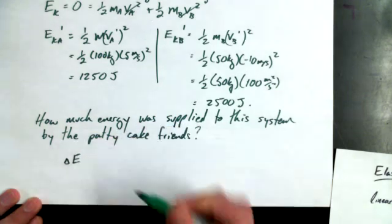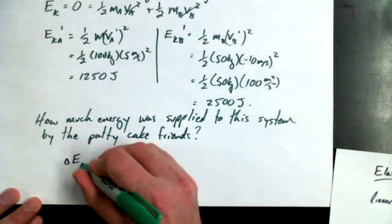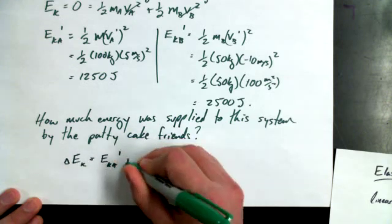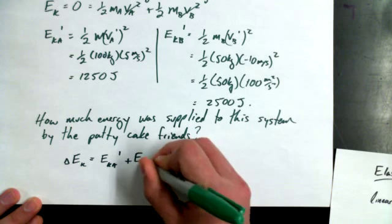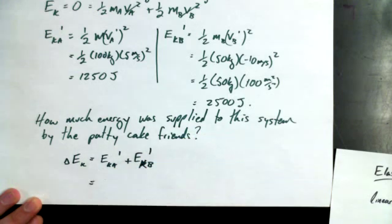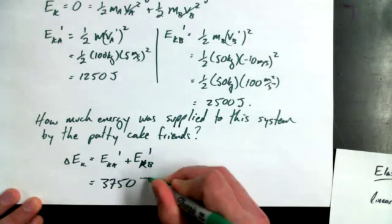So we could say E total, or change in energy total, because obviously the initial kinetic energy was equal to zero. Change in kinetic energy must be equal to Eka-primed plus Eka-B-primed oopsie Eka-B-primed which in this case is 2,500 plus 1,250 what's that, 3,750, something like that? Yep, 3,750 joules. Yeah, 3,750 joules. Again, if we took it to three sig figs, it would still be 3,750 joules.